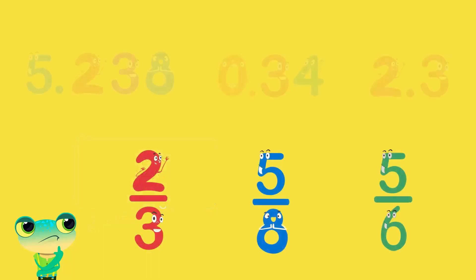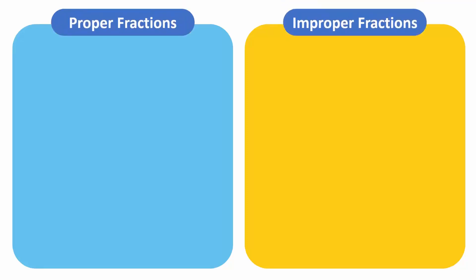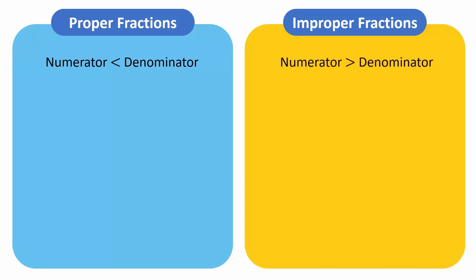What about fractions and decimals? Let us first look at fractions. Recall that fractions are of two types: proper and improper fractions. A fraction in which the numerator is less than the denominator is called a proper fraction, while a fraction in which the numerator is greater than the denominator is called an improper fraction.